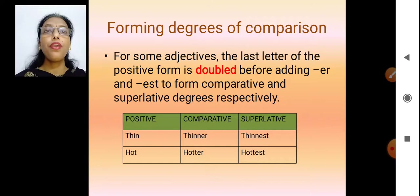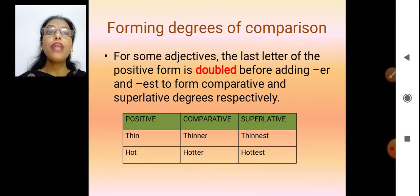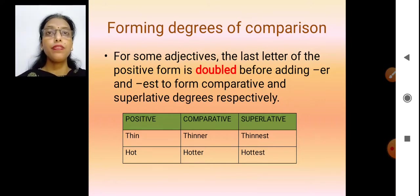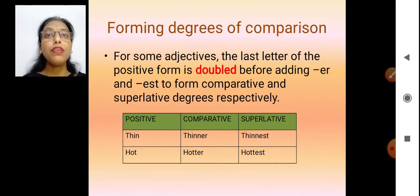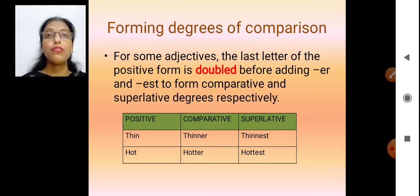Now if the last letter of the positive form is a doubled consonant, what happens? We still add -er and -est. In the case of 'thin', the last letter is doubled — double n — giving thinner and thinnest. Same with 'hot': hotter and hottest.